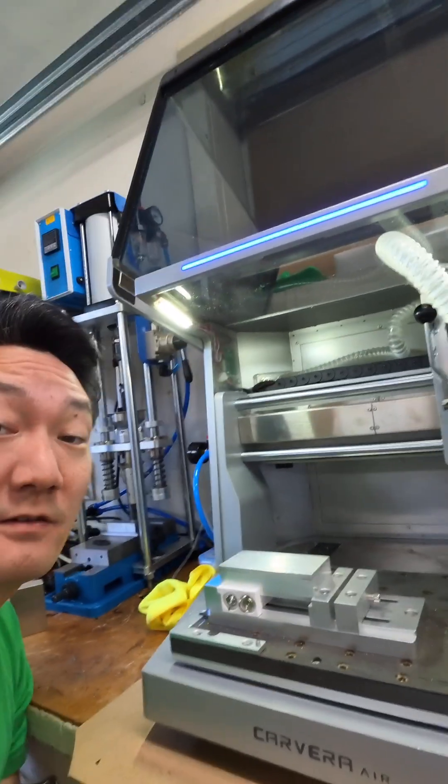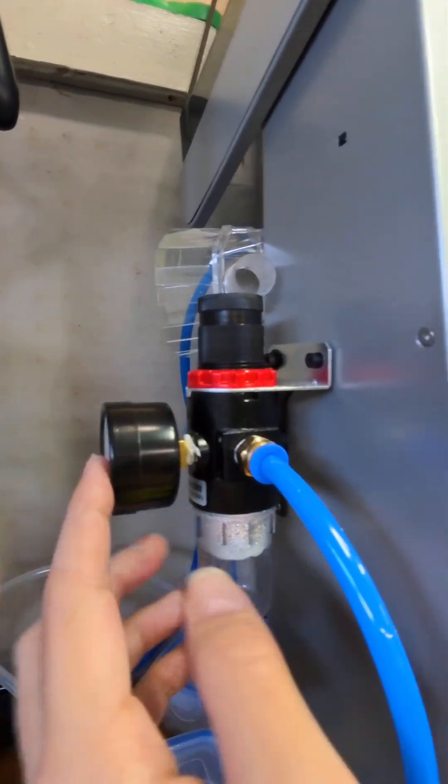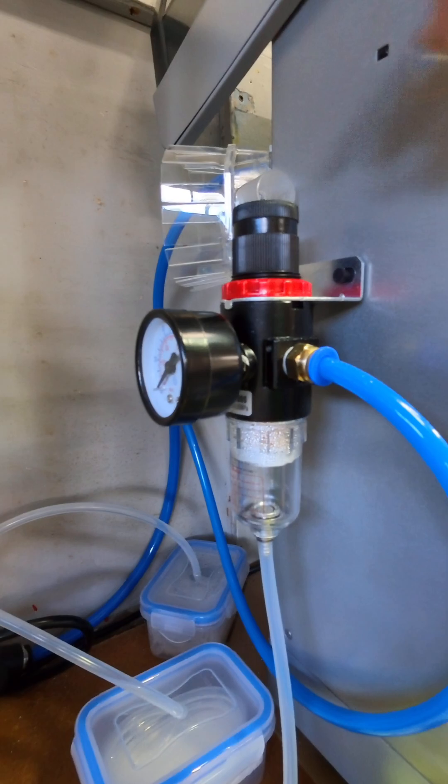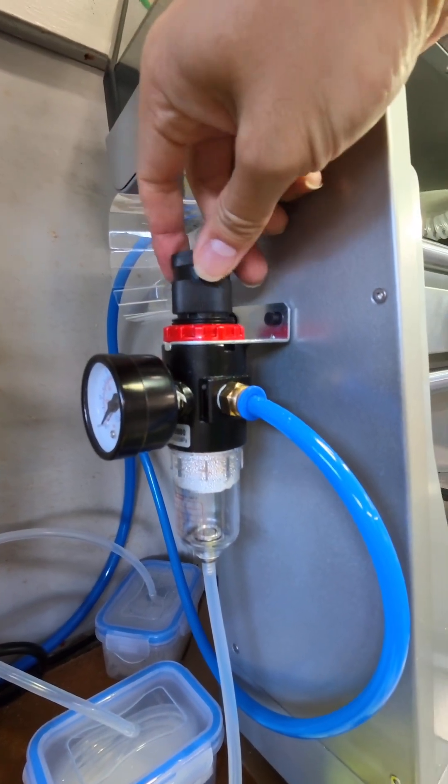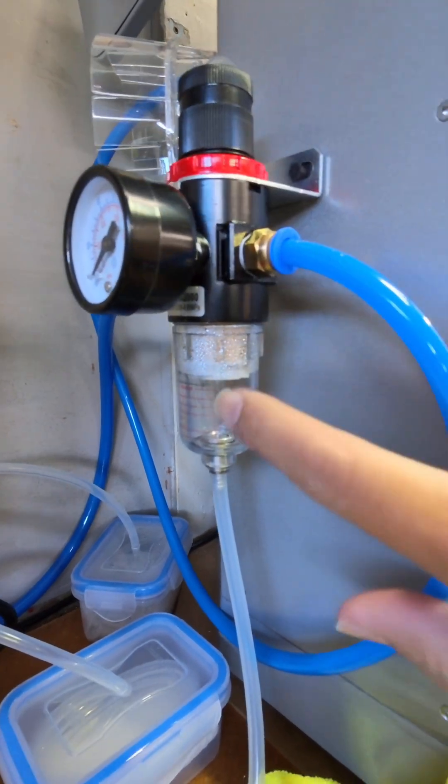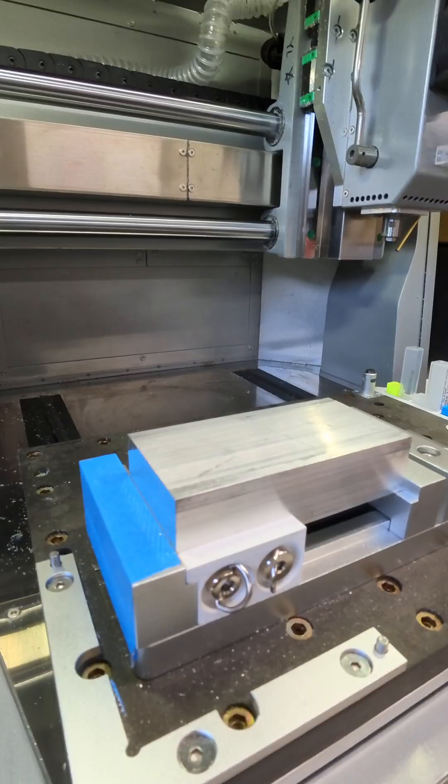This is the Carvera Air and here's some of the mods. So this is a moisture trap. It's got an air regulator on top for managing the pressure, but obviously the most important part is it prevents water from ending up inside the machine.